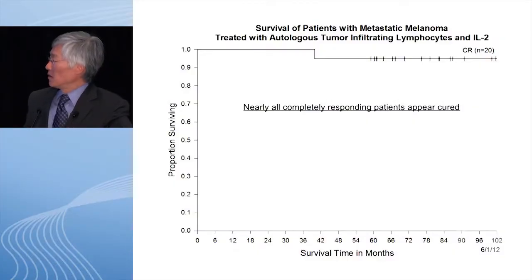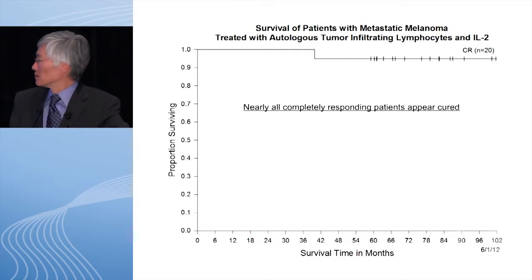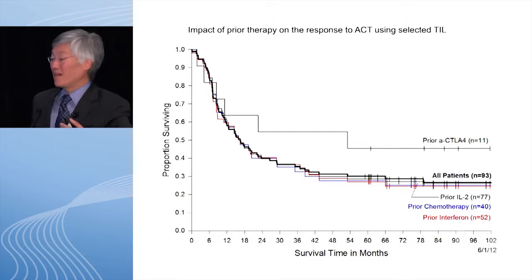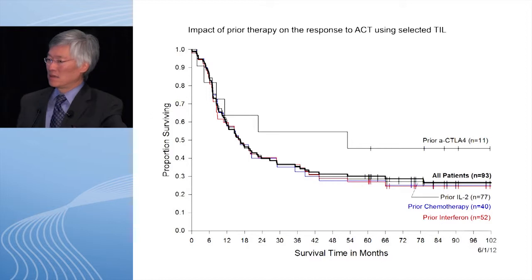Nearly all complete responding patients appear to be cured. We always hedge on the use of the word cure, but with a single administration seven years later, I'm going to use the word. Prior therapies have no impact on whether this works — prior IL-2, prior chemotherapy, prior interferon, and prior ipilimumab. The ipilimumab group looks a little better but is not statistically significantly different; most of those patients were in the high-dose TBI cohort. We're doing a randomized trial of TBI versus no TBI and will know that answer within a year. Failure to respond to previous ipilimumab is not a negative prognostic factor.